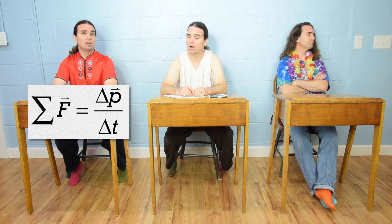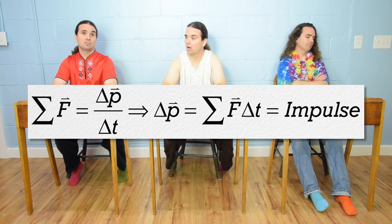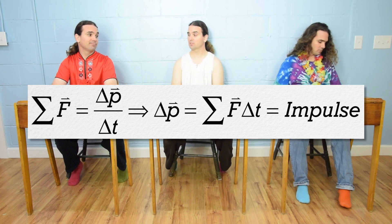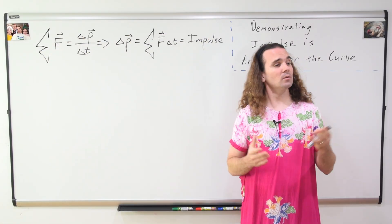Okay, and multiply both sides by change in time to get change in momentum equals net force times change in time, which equals impulse. Where momentum, force, and impulse are vectors. Yeah, thank you.